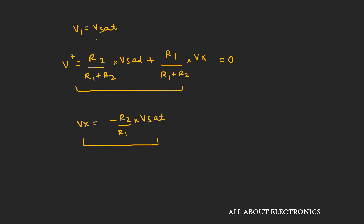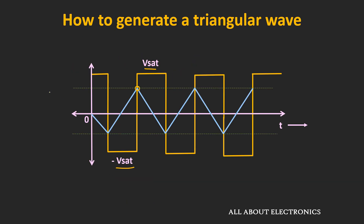If we assume V1 as the negative saturation voltage, that is −V_set, we will get the second threshold. So Vx1 = −(R2 / R1) × V_set is the lower threshold point, and Vx2 = +(R2 / R1) × V_set is the upper threshold point. Whenever the integrator output crosses Vx2, there is a transition from negative to positive saturation voltage. Whenever it crosses Vx1, there is a transition from positive to negative saturation voltage.